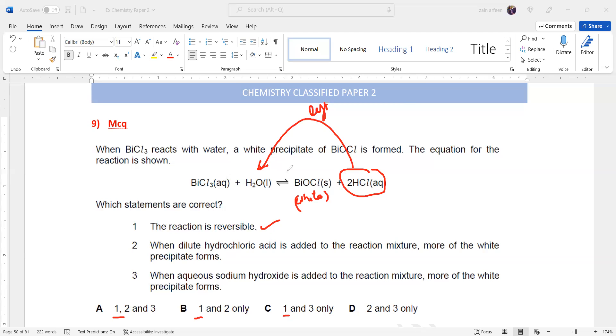If the balance shifts towards the left-hand side, the amount of product will decrease, so there will be less white precipitate. Any option with statement two is totally wrong - so this is wrong, this is also wrong.